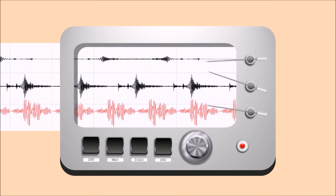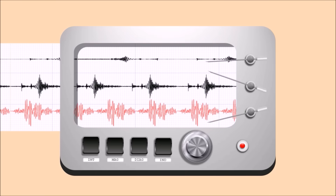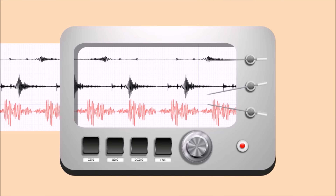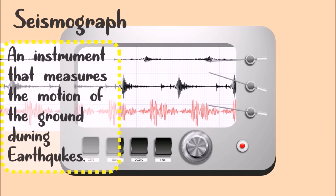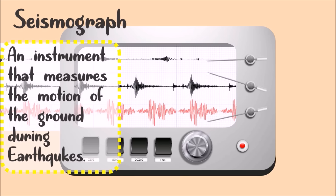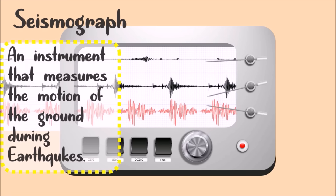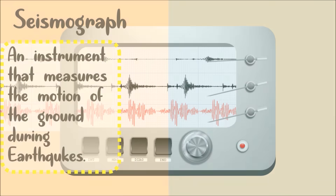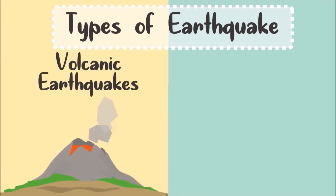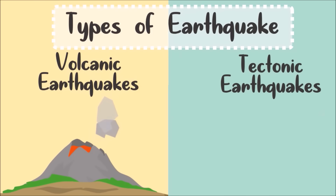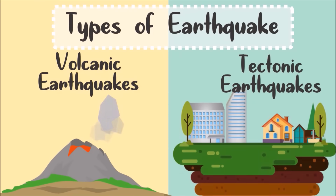The motion of the ground during an earthquake is measured by an instrument called a seismograph. There are actually two types of earthquake: volcanic earthquakes and tectonic earthquakes.